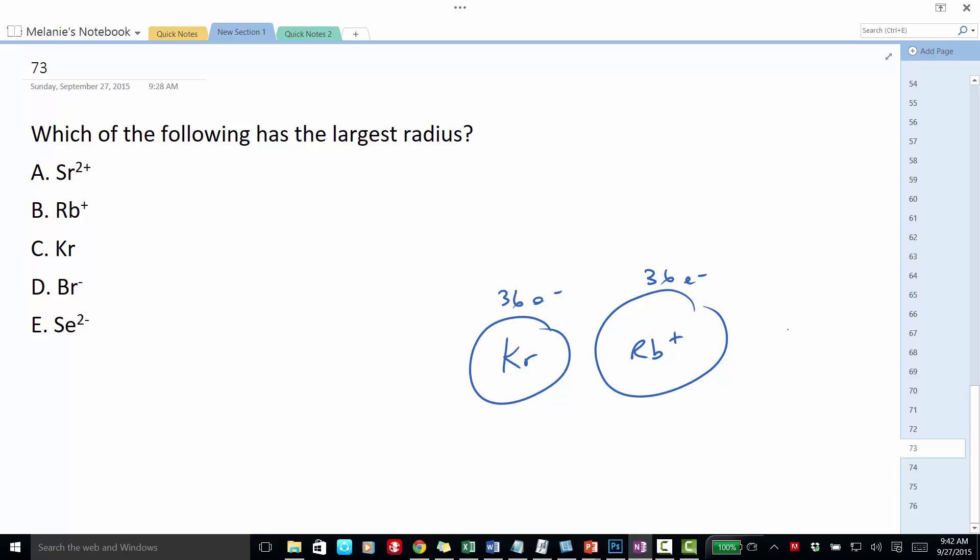Similarly, strontium, well, strontium actually has 38 electrons, but when it becomes the strontium 2+ ion, it also has 36 electrons.